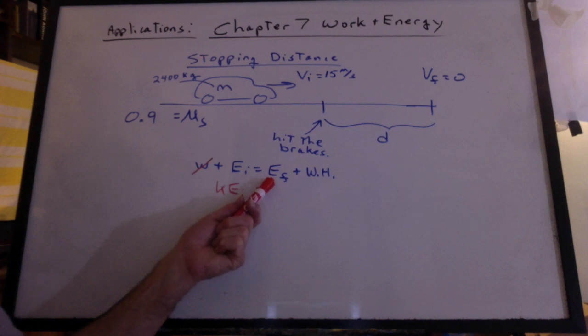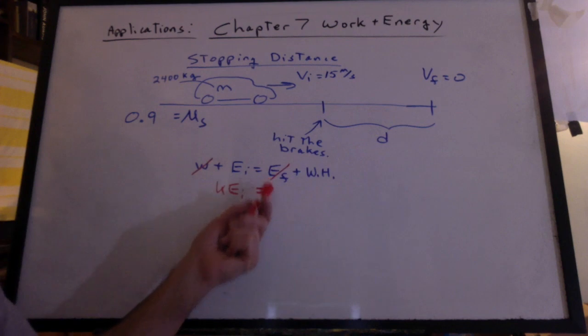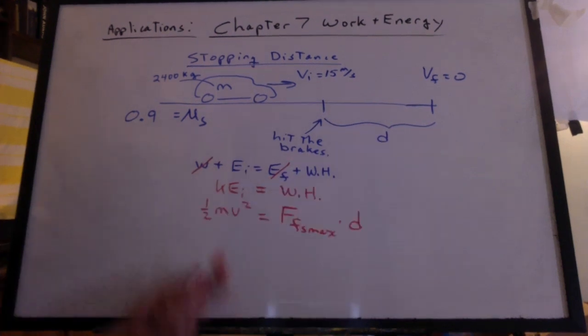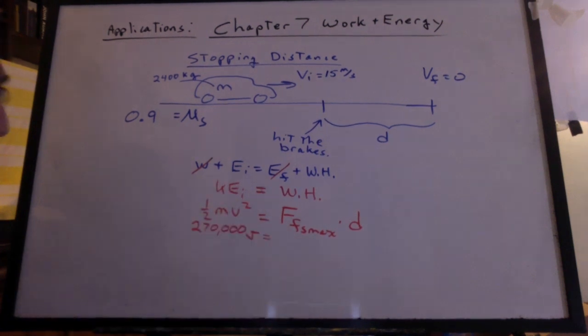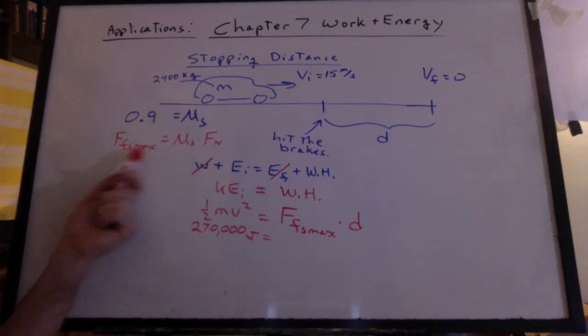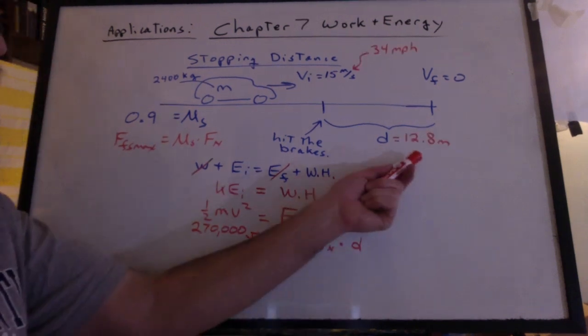Does it have any kinetic or potential energy at the end? No, it's coming to a stop, and it's still at the same height. So, the only thing we've got left is waste heat. We can see that the kinetic energy is turning into waste heat. We have 270,000 joules. To get the distance, we need to know the force of friction static maximum. The force of friction static maximum is mu s times fn, and we get 21,168 newtons. So, what's that distance? We get 12.8 meters.